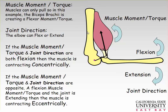Here we see the elbow joint with the biceps brachii muscle and its line of force, along with the perpendicular distance between that line of force and the joint center of rotation — that creates our muscle torque, or muscle moment. When the muscle is creating a flexor torque, which is what the biceps brachii does, muscles can only pull, so the biceps brachii creates a flexor moment — that's all it can do.